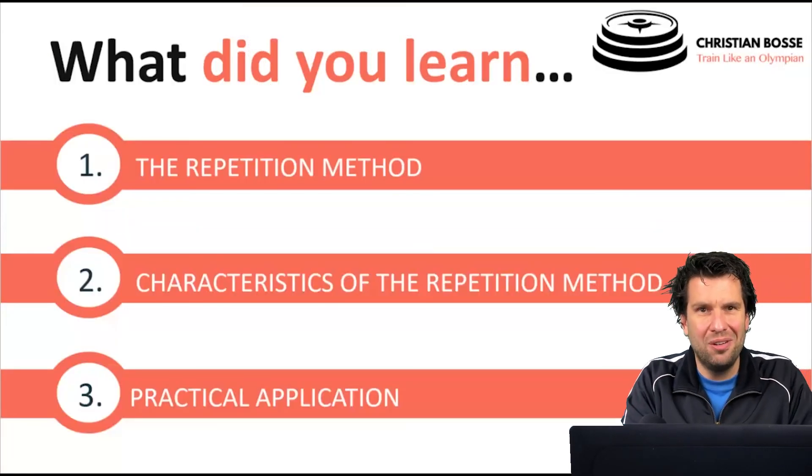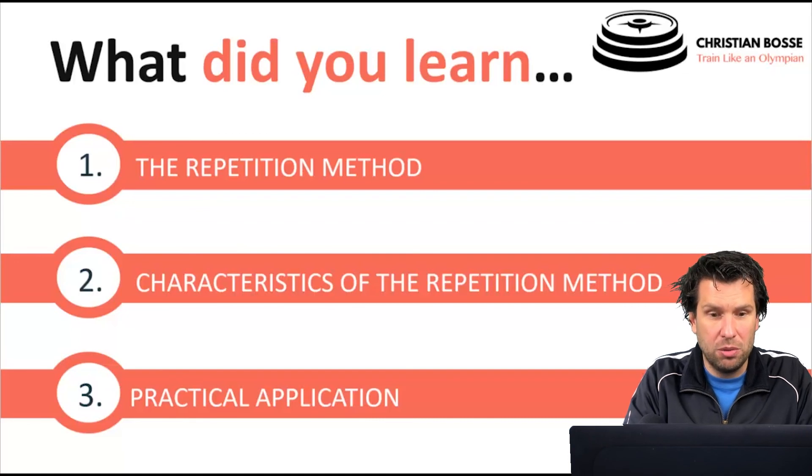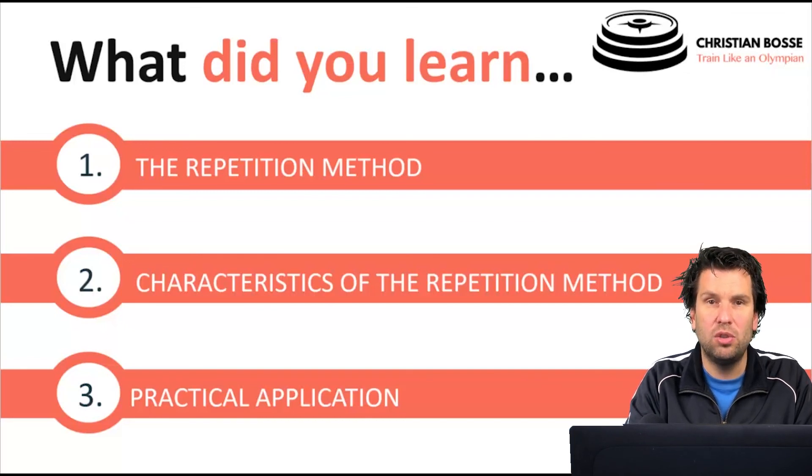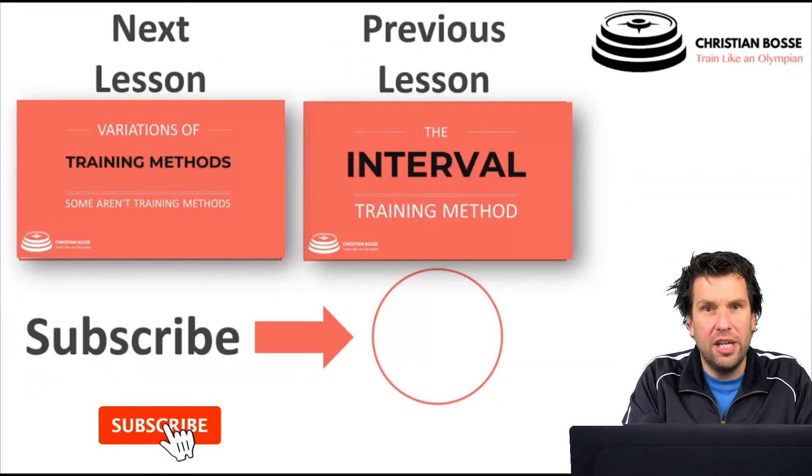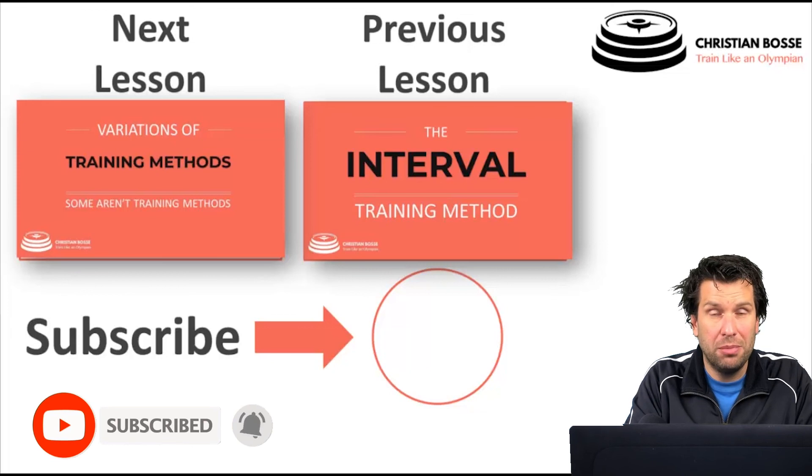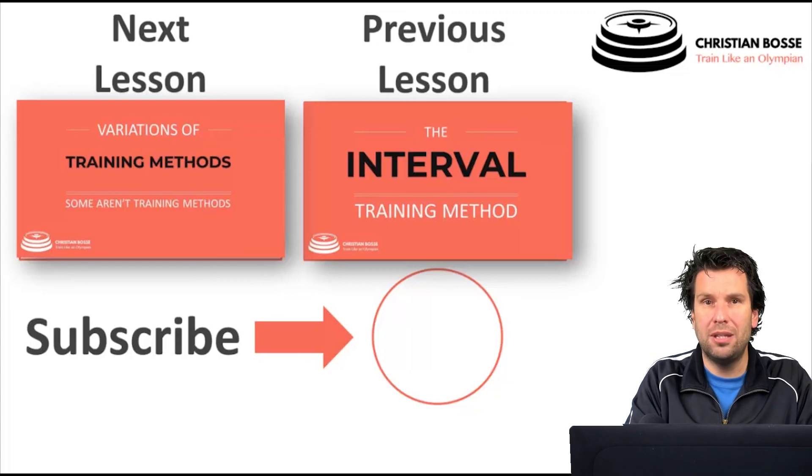That brings us to the end of this lecture where we talked about the repetition training method, the third method in this mini-course. And what did you learn? We talked about the repetition method. We talked about the characteristics of the repetition method. Mainly complete rest is the main characteristic. And the practical application. When does it make sense to use the repetition method? And when does it not make sense to use the repetition method? I see you in the next one and the last one, where we talk about variations of the training methods. And we also talk about some things that are called training methods, which are actually not training methods.